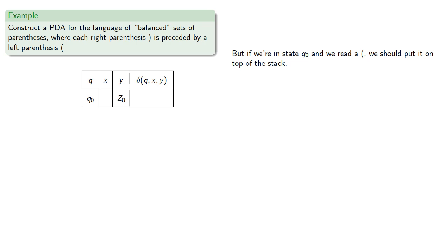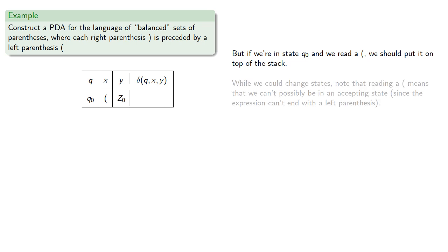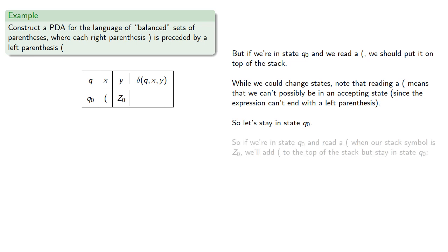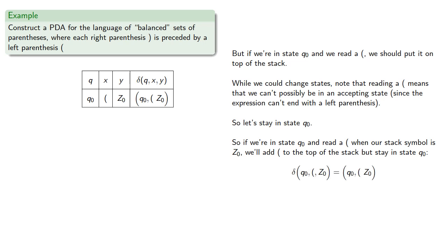So if we're in state q0 and we read an open parenthesis, we should put it on top of the stack. While we could change states, note that reading an open parenthesis means we can't possibly be in an accepting state since the expression can't end with a left parenthesis, so let's stay in state q0. And so delta(q0, open parenthesis, z0) = (q0, open parenthesis z0).